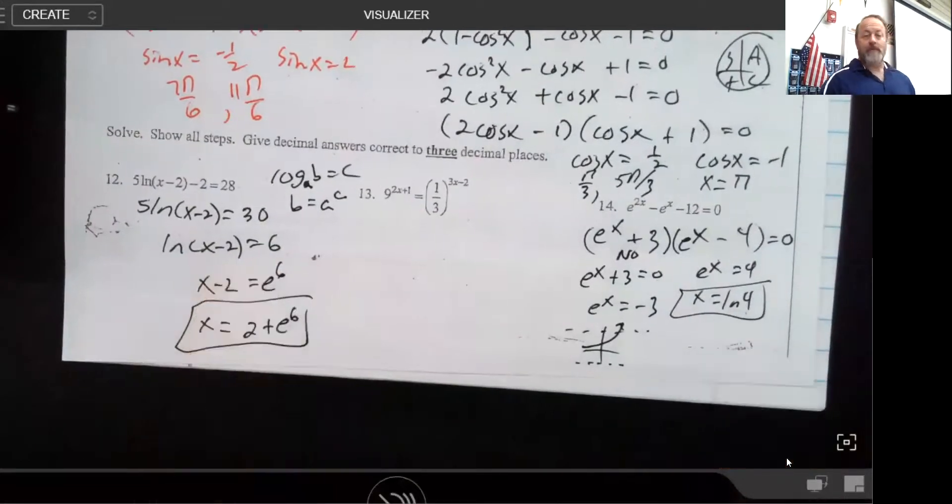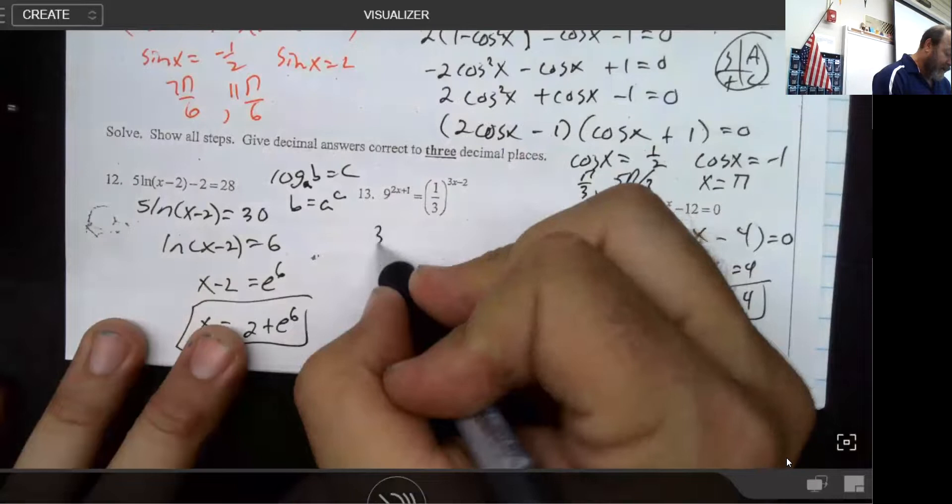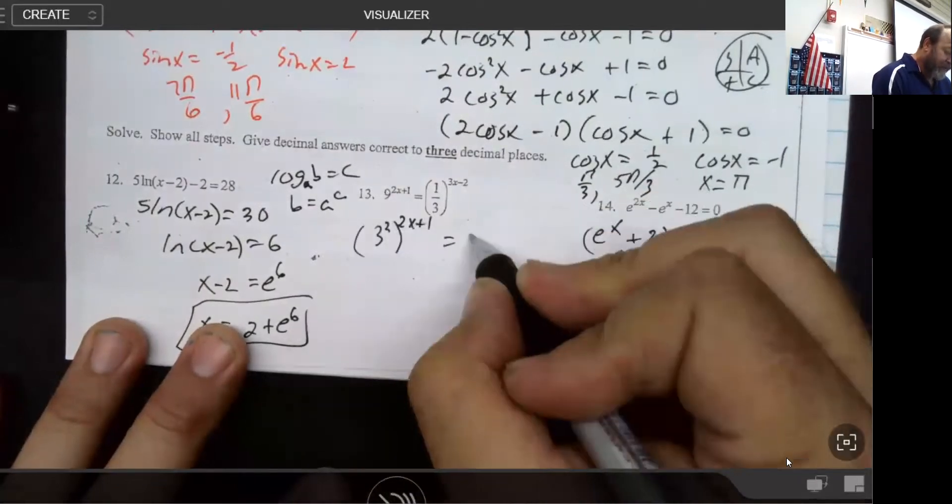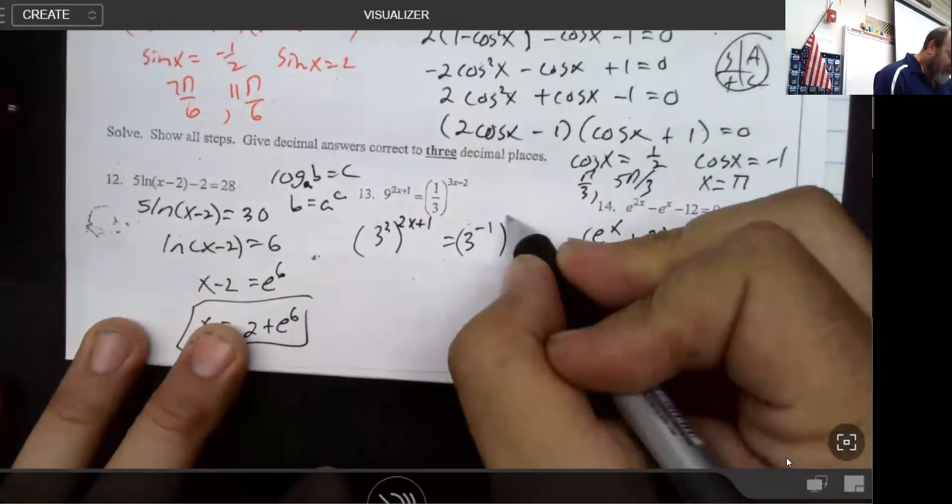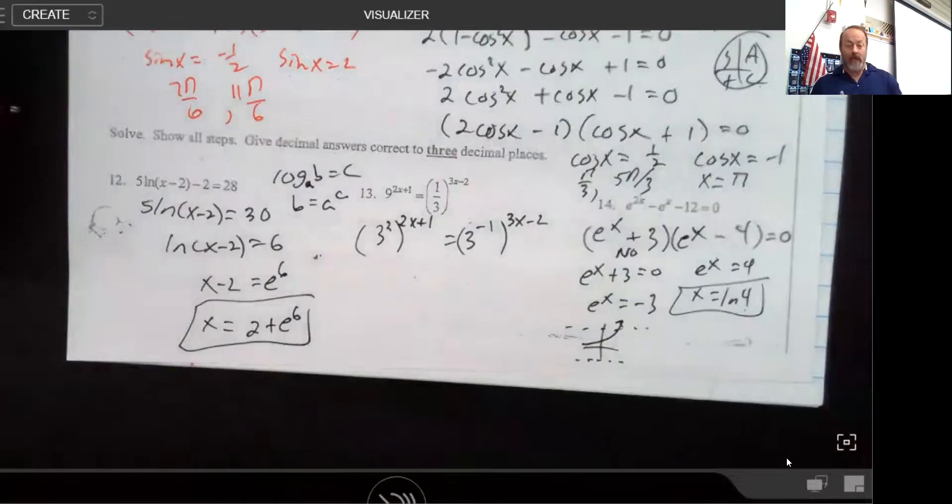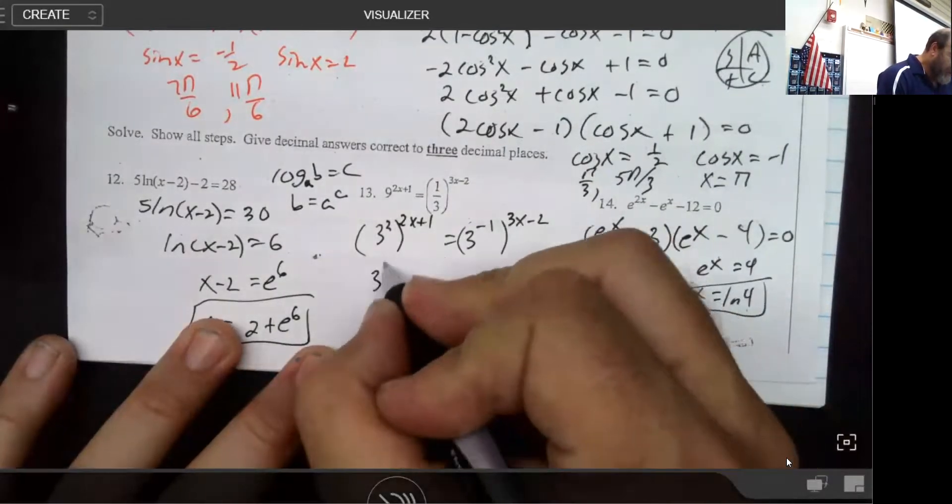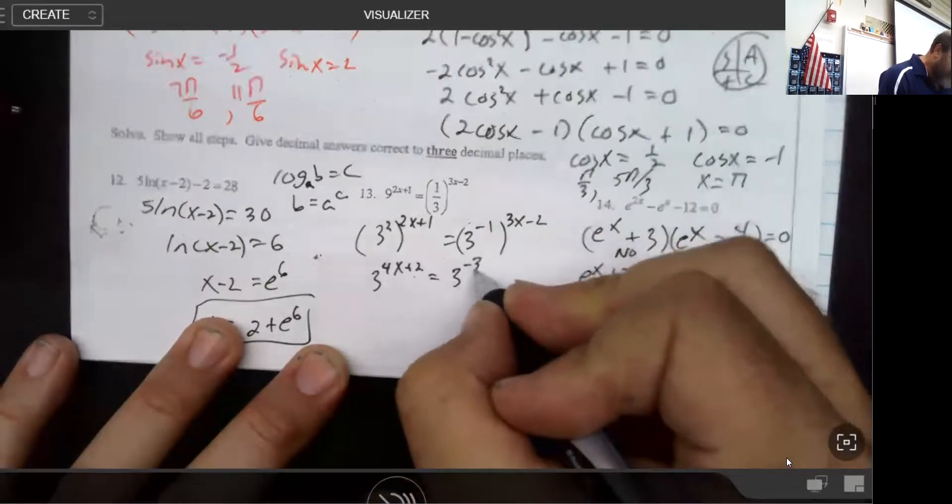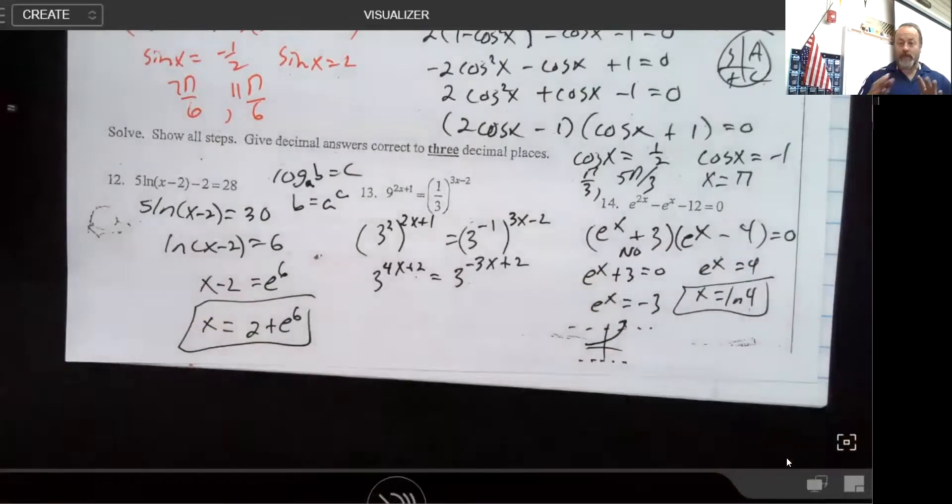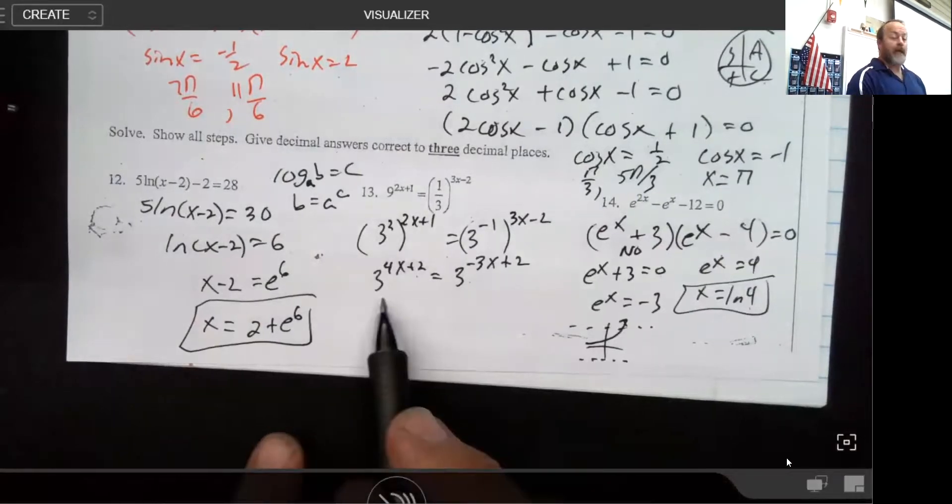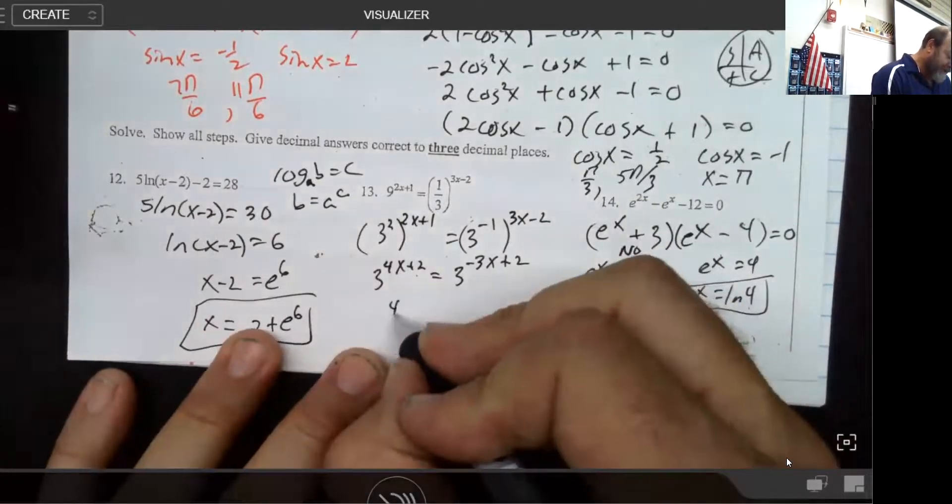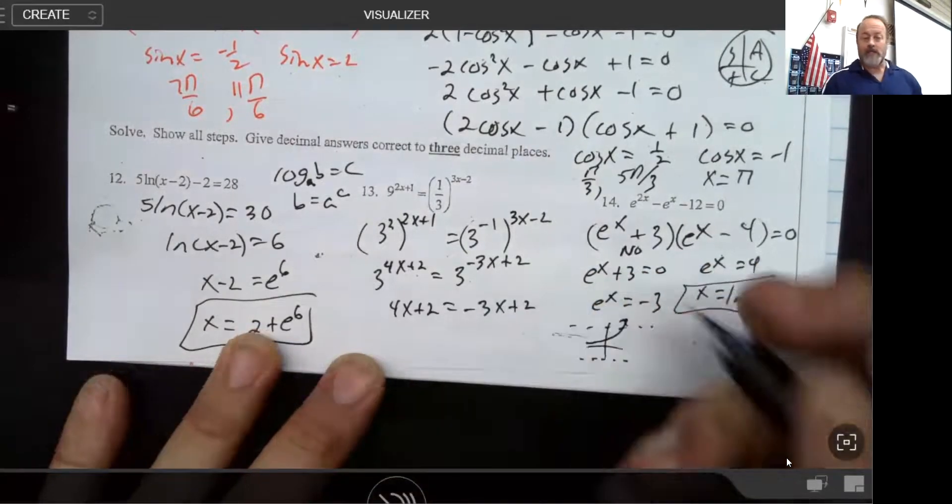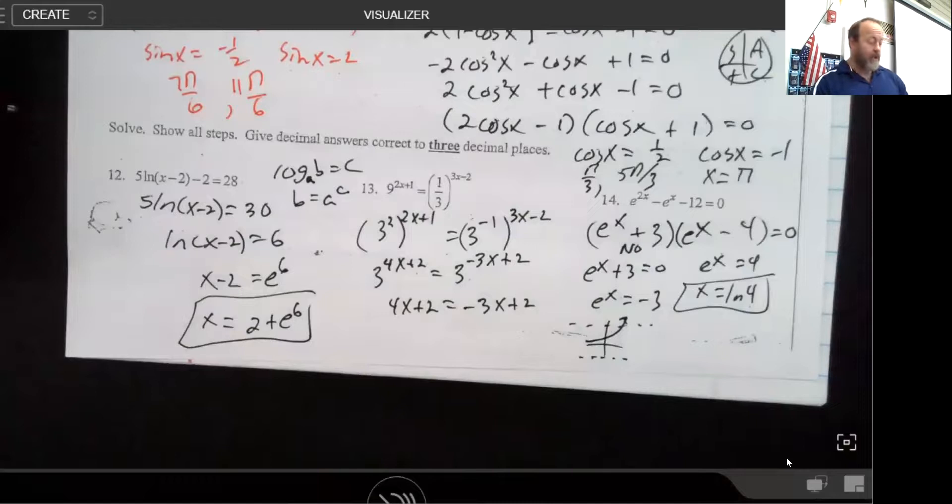And our last problem is actually a much nicer question because you can see the 9 and the 3 they have something in common, they have that common base. So what I'm going to do is I'm going to take this 9 and call it 3², and I'm going to call this one-third 3 to the -1. Now by doing that I've turned these things into a common base which makes them very easy to understand. So I've got 3 raised to the 4x plus 2 is the same as 3 to the -3x plus 2, because one of the nice things about exponents is powers of powers which is what we're looking at here multiply. And so if the base is matched then the powers have to match. So I'm just going to go ahead and do this.